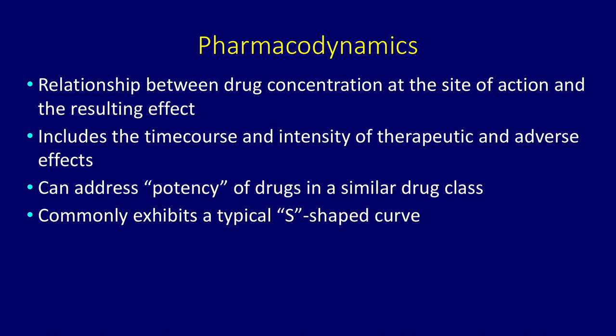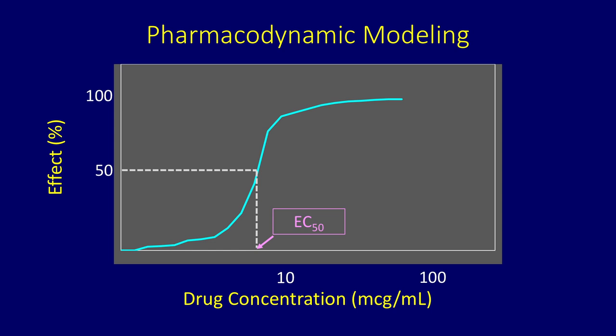Pharmacodynamics is the relationship between drug concentration at the site of action and the resulting effect. It includes the time course and intensity of the therapeutic effect or adverse effect, and we can address the potency of a given drug within a class of similar drugs. Pharmacodynamics is commonly exhibited by a typical S-shaped curve. At very low concentrations there is no appreciable effect, but as concentration increases, the effect increases dramatically until a plateau is hit. One common parameter is the effective concentration in 50% of individuals — the EC50.